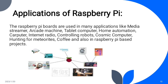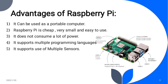Hello everyone, myself Rashmit Materi, and I'll be talking about the advantages and disadvantages of Raspberry Pi. Firstly, it can be used as a portable computer — if you attach it to a display, you can use it as one. Secondly, it is cheap, very small, and easy to use, costing around $50 and roughly the size of a credit card, making it power efficient. It also supports multiple programming languages like C, C++, Python, etc., and supports the use of multiple sensors simultaneously.